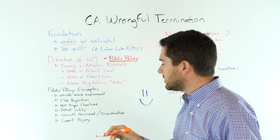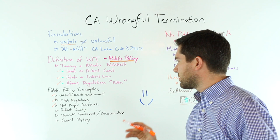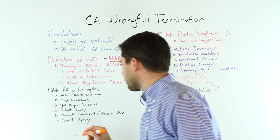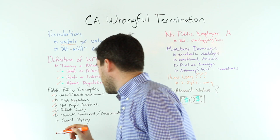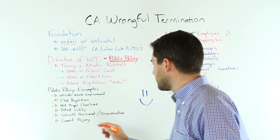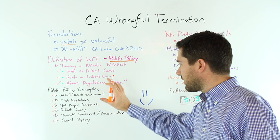If you complain about not getting paid proper overtime wages, that would be a violation of public policy. If you blow the whistle on unsafe patient care conditions—violation. If you refuse or you complain about unlawful harassment or unlawful discrimination and then you're fired—violation of public policy. If you refuse to commit perjury at the behest of your employer, that would be a violation of public policy.